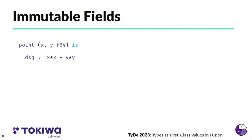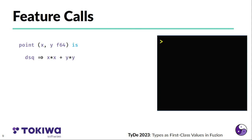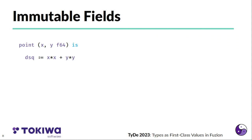d squared is not the only field in this example. The x and y argument fields are also fields that are implicitly initialized when the point is created.